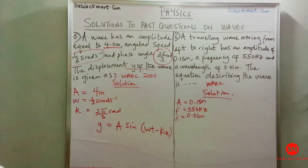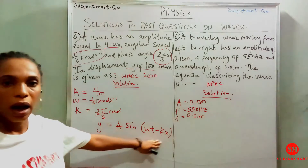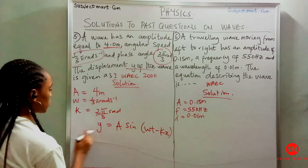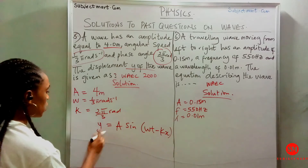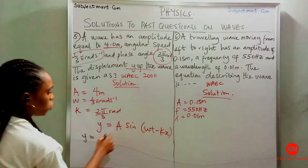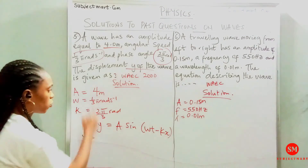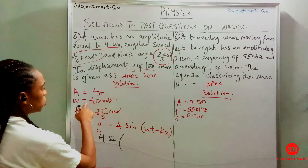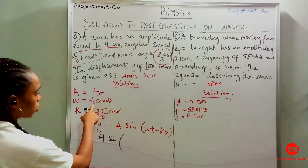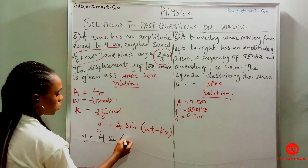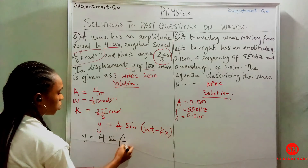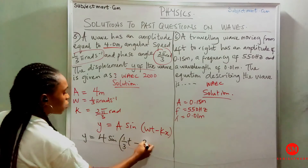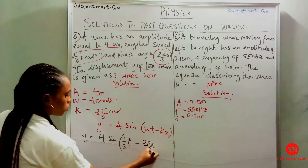We are asked to write an equation of this form. Our y equals A, which is the amplitude, so wherever we see A we put 4. So y equals 4 sine of wt minus kx, where w is 1 over 3 pi, giving us t, and k is 2π over 3, giving us x.